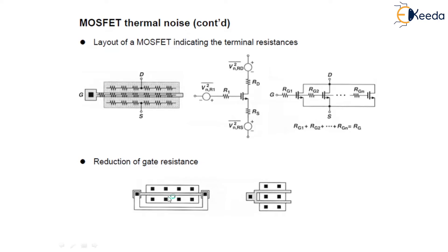To reduce this thermal noise, thermal noise can only be controlled by gm, the transconductance. The effect of Rg can be reduced by proper layout, as shown in figure A below. In figure A, the two ends of the gates are shorted by a metal line, thus reducing the distributed resistance from Rg to Rg/4.